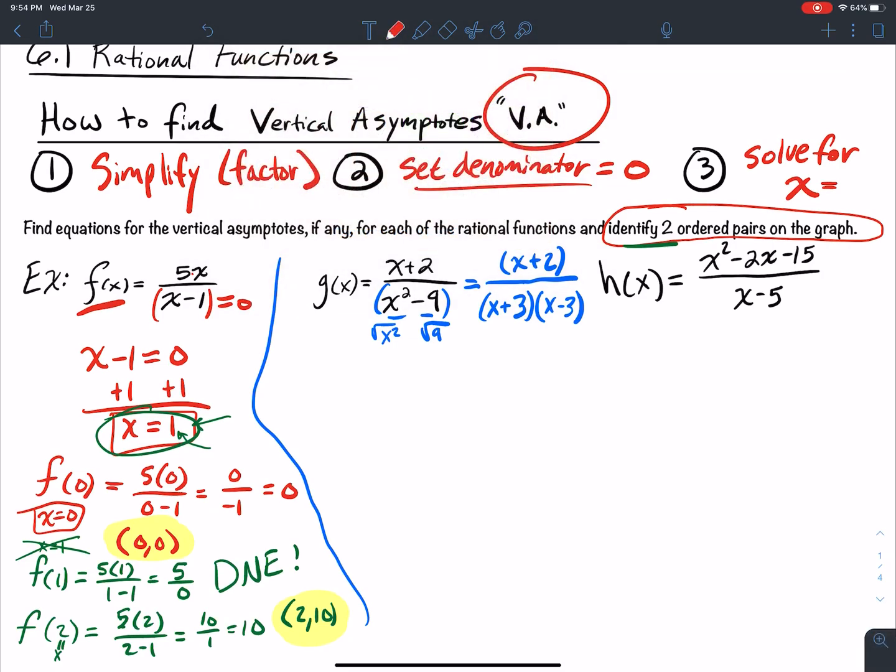What does step 2 tell me to do? Set the denominator equal to 0. So I have (x+3)(x-3) equals 0, so x+3 equal to 0 and x-3 equal to 0. The opposite of adding 3 is subtracting 3, and so that's going to get me x equals negative 3. And over here I add 3 to get rid of the negative 3, and I get positive 3. So these are my vertical asymptotes.